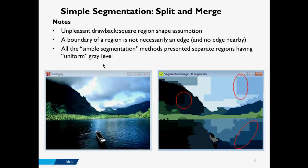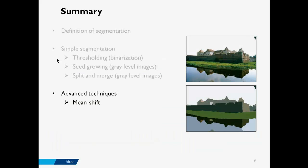All simple segmentation methods presented so far separate regions having uniform gray levels, based on the assumption that regions to be separated are uniform in intensity. This is not always the case, so we must consider whether the regions we want to separate fulfill this assumption. For this reason, we now present an advanced technique called mean shift, which applies additional intelligence to the processing.